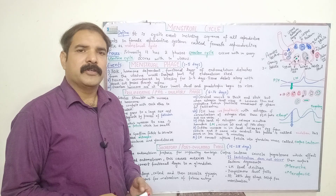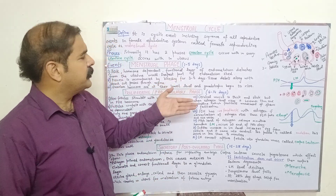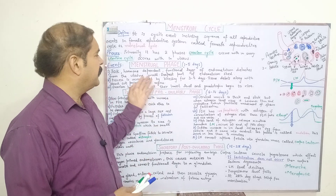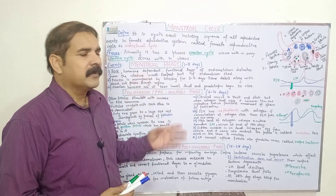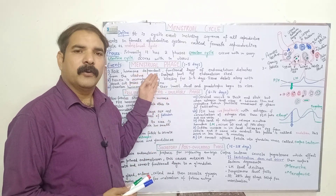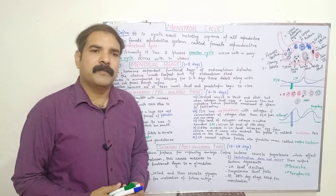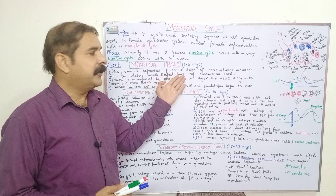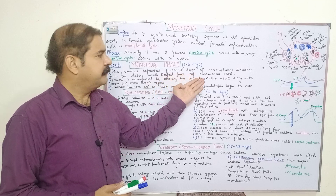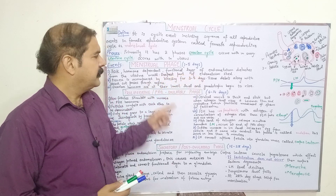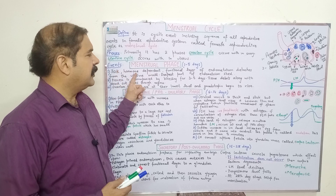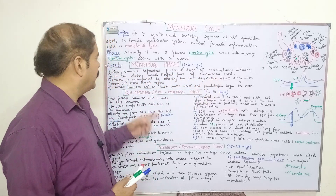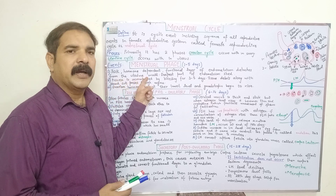There are three major phases of the menstrual cycle. The first one is the menstrual phase, whose duration is about day one to day five. During this phase, the thick hormone-dependent functional layer of the endometrium detaches from the uterine wall.